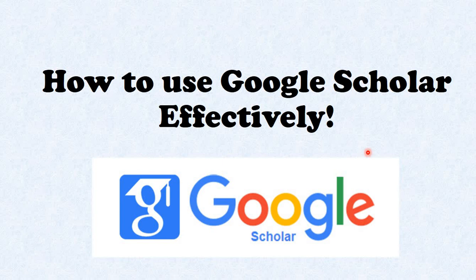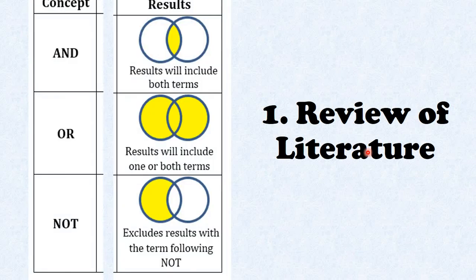I am going to mention three important uses of Google Scholar. Number one is the review of literature. You can make a good review of literature through Google Scholar, before which we should understand about the Boolean logics.